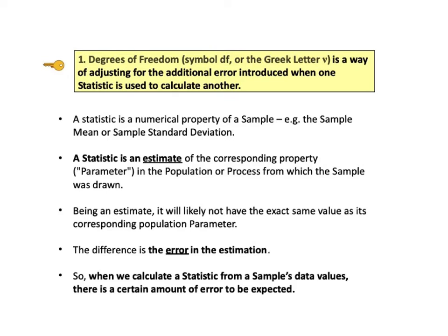Okay. Now let's go into more detail on each of these Keys to Understanding. KTU number 1 tells us that degrees of freedom, symbol DF or the Greek letter nu, is a way of adjusting for the additional error which is introduced when one statistic is used to calculate another.